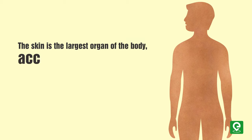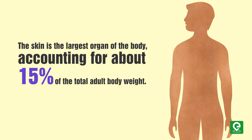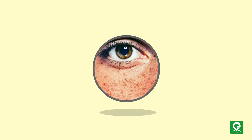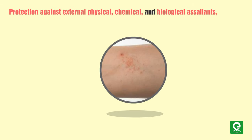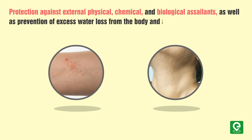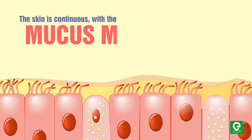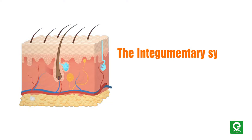The skin is the largest organ of the body, accounting for about 15% of the total adult body weight. It performs many vital functions, including protection against external physical, chemical, and biological assailants, as well as prevention of excess water loss from the body and a role in thermoregulation.